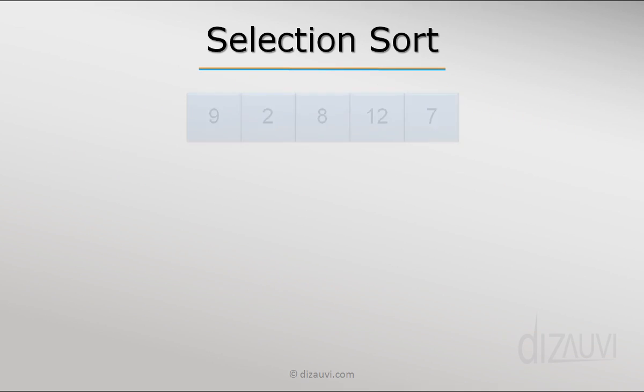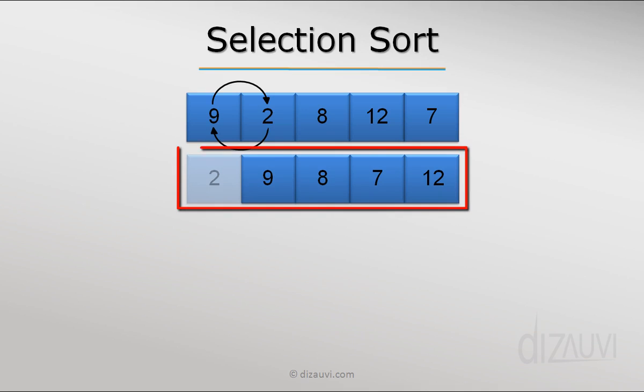So if we have an array of numbers, we go through all the elements to find the minimum and then exchange it with the first array element. This is how the array looks like with the first element as sorted.